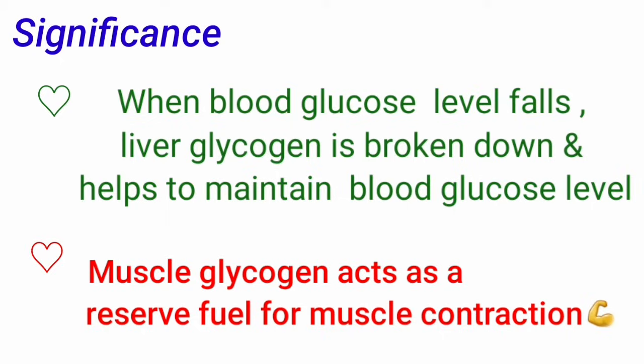Whereas, the muscle glycogen acts as a reserve fuel for muscle contraction. Muscle glycogen cannot be used to maintain the blood glucose level because the enzyme glucose-6-phosphatase, which converts glucose-6-phosphate to glucose, is not present in the muscle. That's why glucose-6-phosphate formed by glycogenolysis in the muscle enters into glycolysis to generate ATP.